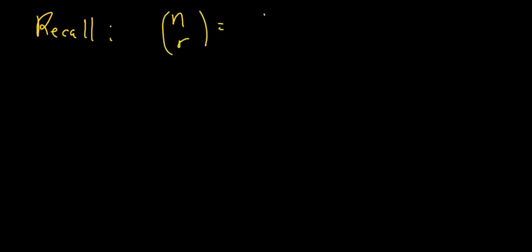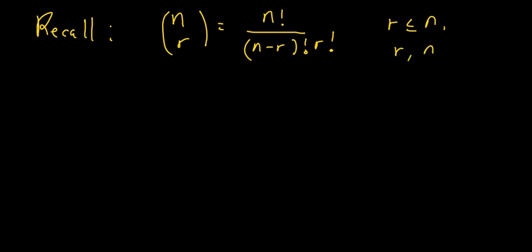As a reminder: whenever you have n choose r, this becomes n factorial over n minus r factorial times r factorial. This is only true whenever r is less than or equal to n and both r and n are positive integers — that's the condition for this formula to work.